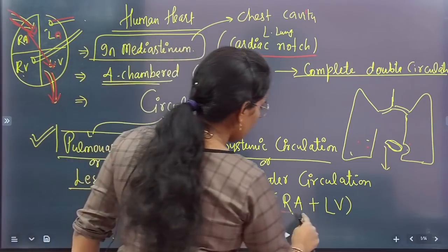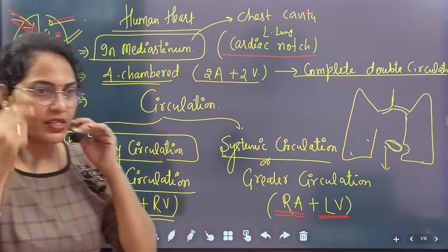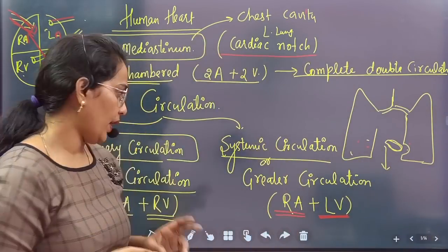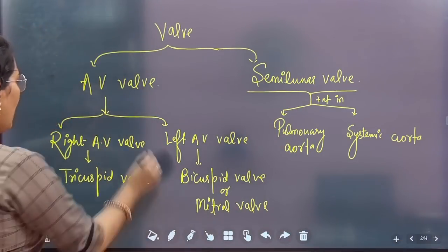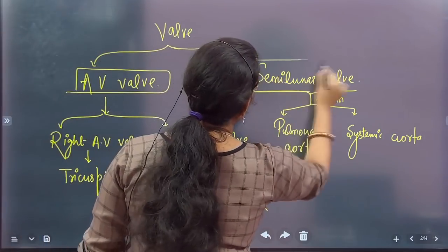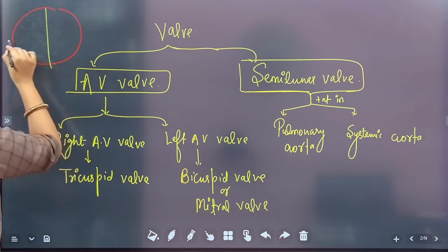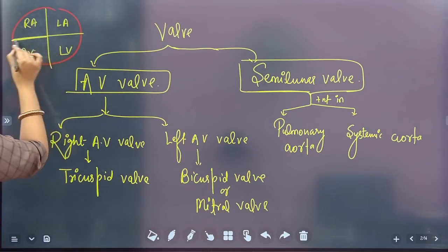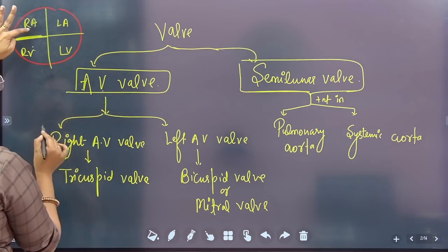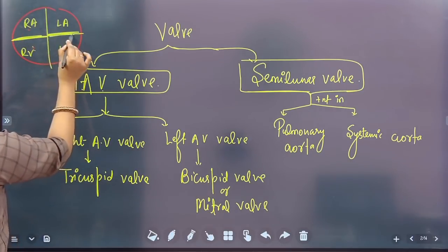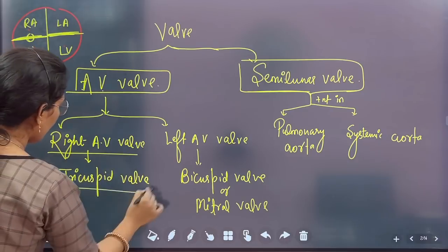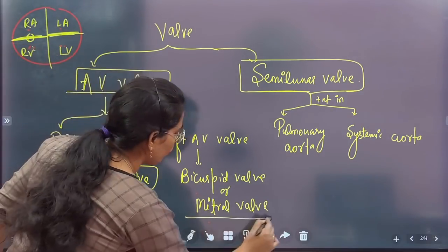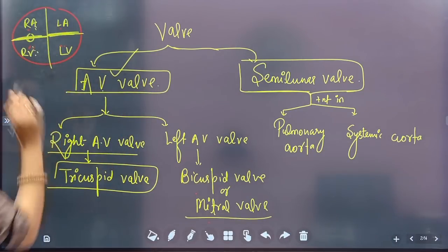We call this systemic circulation. In systemic circulation, the right auricle and left ventricle are involved. Between the right auricle and right ventricle, there is an auriculo-ventricular (AV) valve. The AV valve on the right side is the tricuspid valve. Between the left auricle and left ventricle, there is the bicuspid (mitral) valve. Both are AV valves — auriculo-ventricular valves.